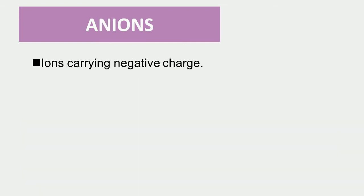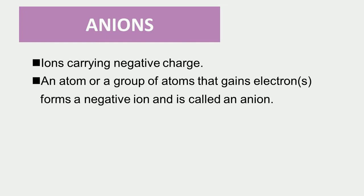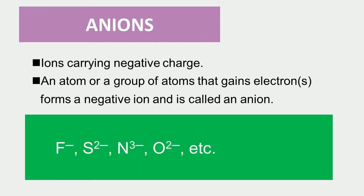Ions carrying negative charge are called anions. Therefore, an atom or a group of atoms that gains 1 or more electrons forms a negative ion and is called an anion. For example, F−, S2−, N3−, O2−, etc. are anions.